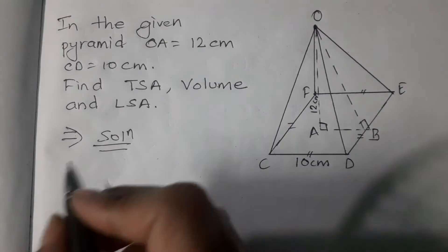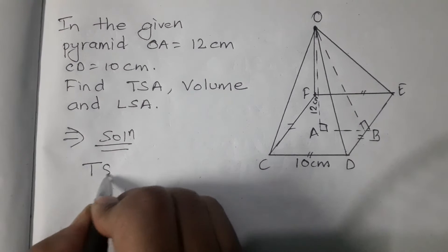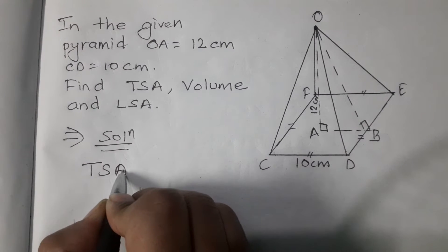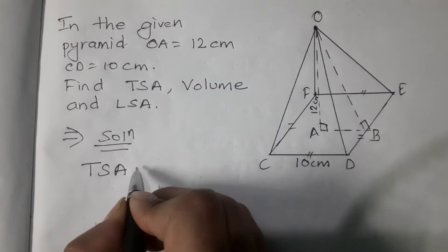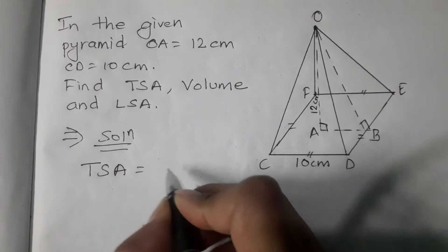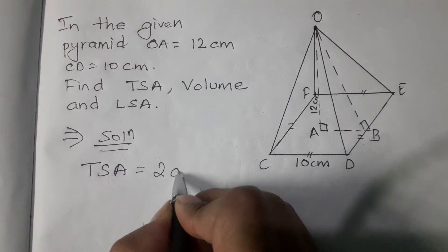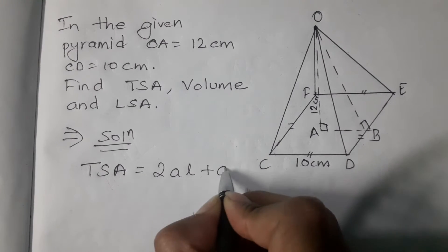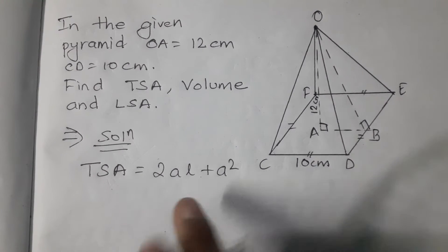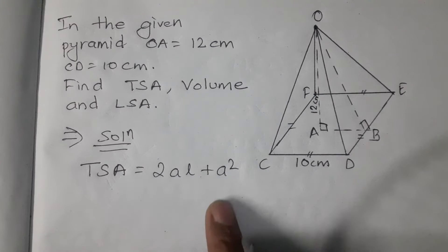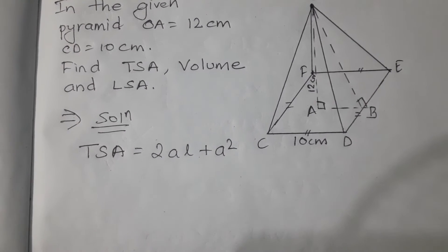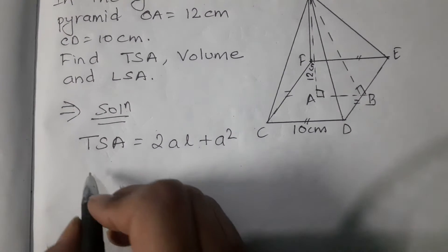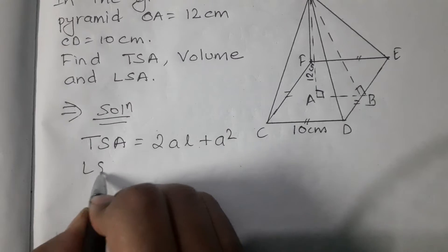The total surface area of the pyramid is 2aL plus a square. I am making a video. Similarly, the lateral surface area formula is also covered.